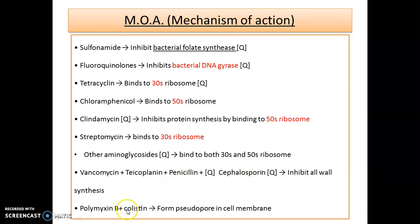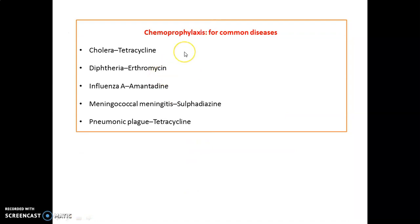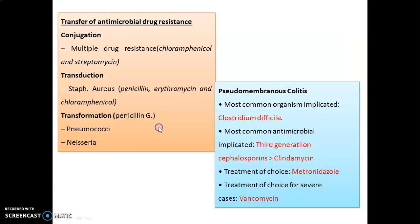Vancomycin, teicoplanin, penicillin, and cephalosporins inhibit cell wall synthesis. Polymyxin B and colistin form pseudopores in the cell membrane. For chemoprophylaxis of common disorders: cholera — tetracycline; diphtheria — erythromycin; influenza A — amantadine; meningococcal meningitis — sulfadiazine; pneumonic plague — tetracycline.